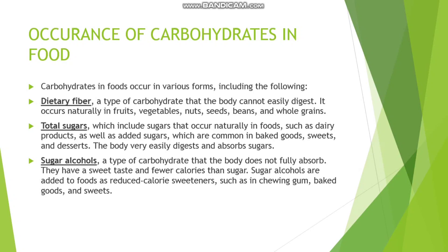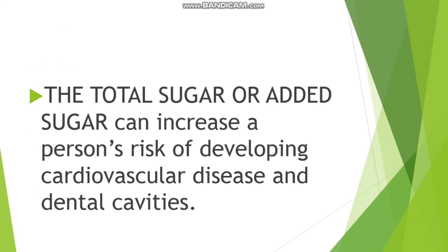Total sugar includes added sugar. These are found in processed foods such as pizzas, pastas, sandwiches, burgers, etc., and this is not good for our health. Next is sugar alcohols, which are found in chewing gums, baked goods, and sweets, etc.